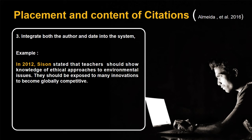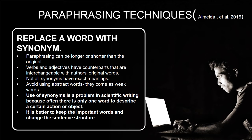Most of the published materials or articles in international journals are using example number one for placement and content of citations. So I suggest that you also use this in writing your citations in your thesis or research paper. In documentation, we cite the sources as direct quotations or indirect quotations or paraphrases. There are different paraphrasing techniques as cited by Almeda et al. in 2016.